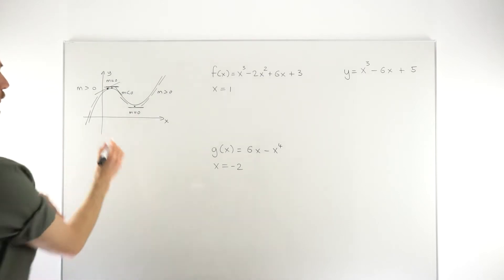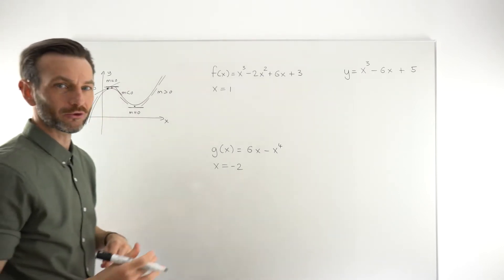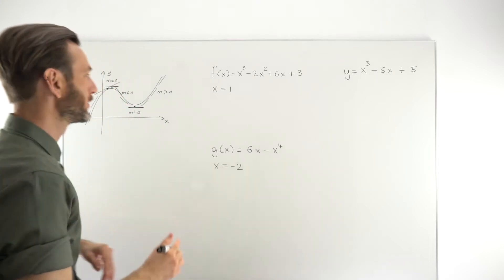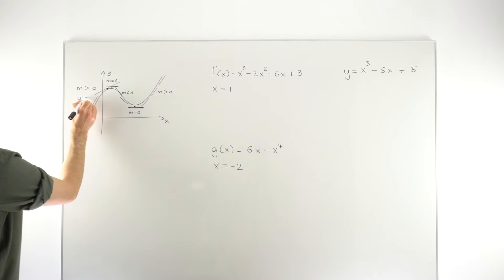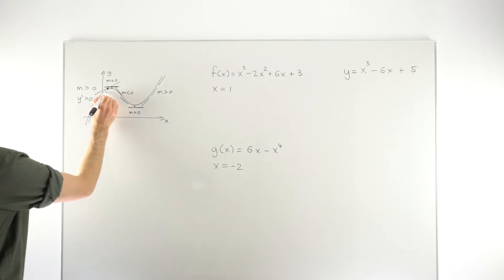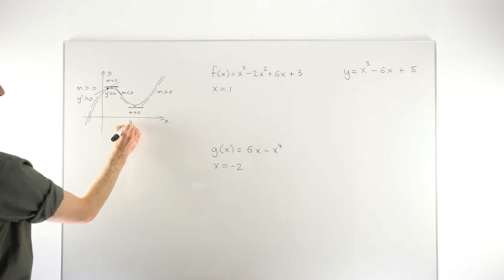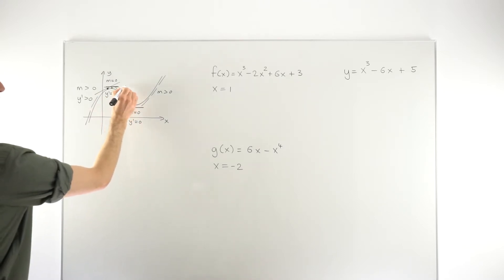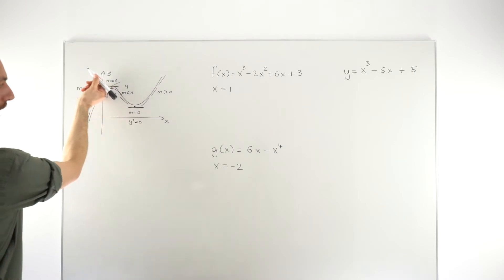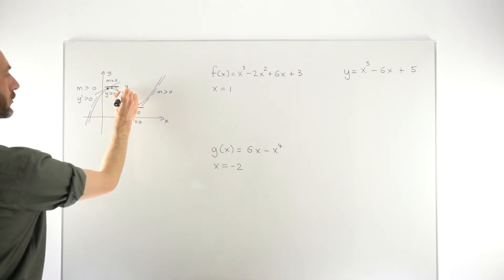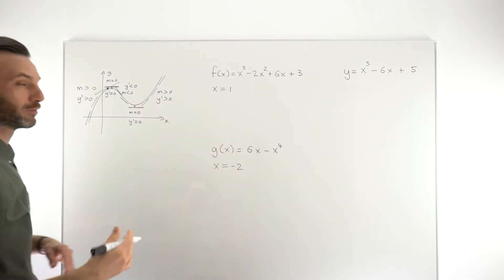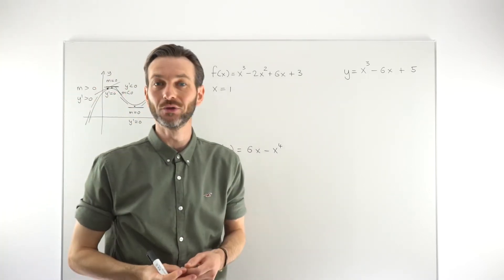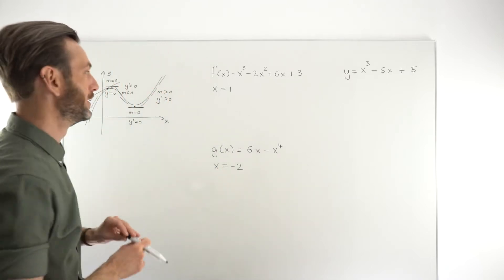Since gradient and derivative are the same thing, the derivative y′ is also greater than zero where the graph slopes up. At each critical point, y′ equals zero. For the points where the graph is sloping down, the derivative is negative. So the derivative is just matching the gradient — the two give you the same results.